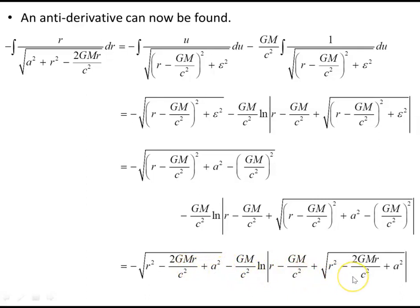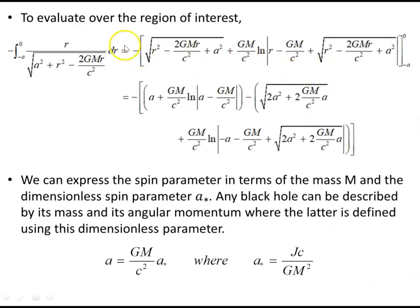Putting ε² = a² − (GM/c²)² back in, we end up with the full antiderivative. Now to find the proper distance, we integrate in the positive direction from r = −a up to r = 0. Evaluating the antiderivative between those limits: at r = 0, all r terms drop out, leaving the square root of a² = a, plus GM/c² times the natural log of a.